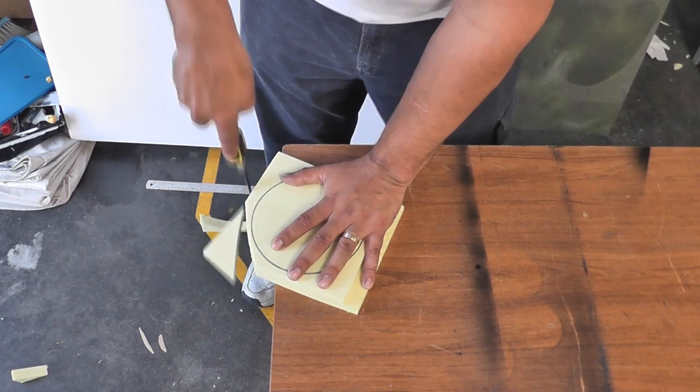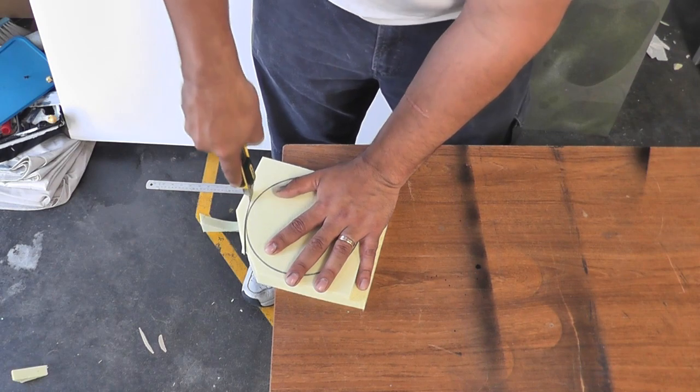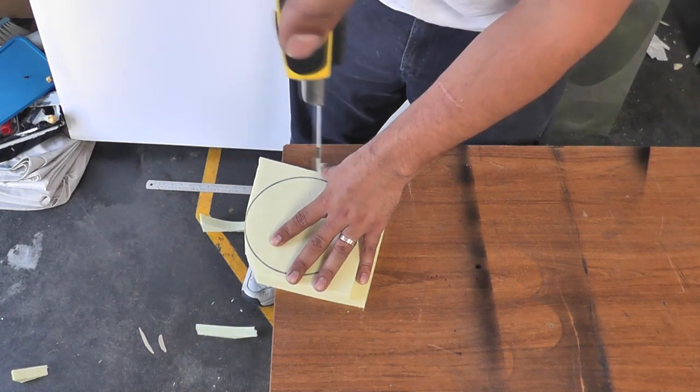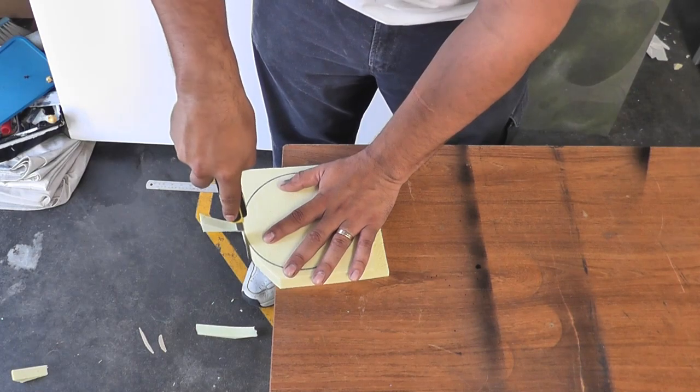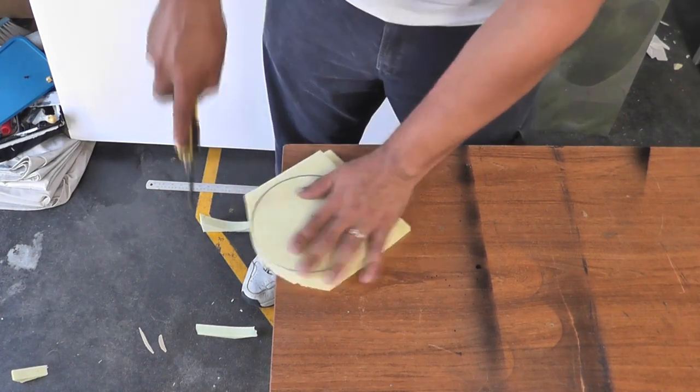Now you don't need to worry about being too accurate to begin with. Just get close and then start to come through. The only thing you need to make sure here is that you're trying to hold the knife as perpendicular as possible. And then just slowly saw away at that foam.